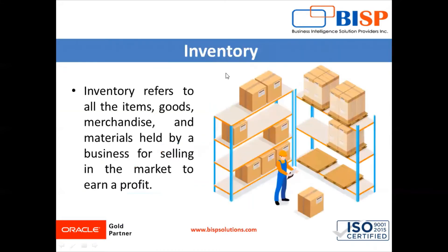So, the most common definition for inventory is: inventory refers to all the items, goods, merchandise, and material held by a business for selling in the market to earn a profit. For example, if a newspaper vendor uses a vehicle to deliver newspapers to customers, only the newspaper will be considered as inventory and the vehicle is considered as an asset.